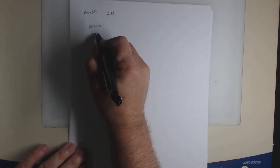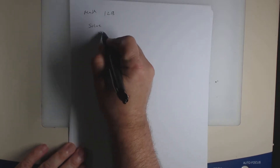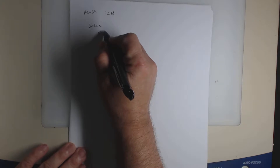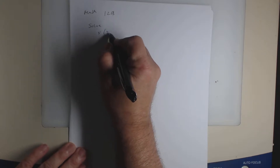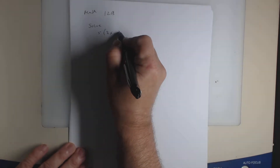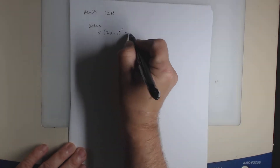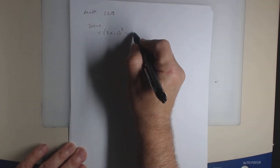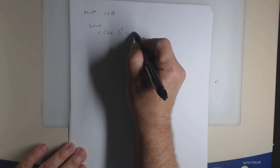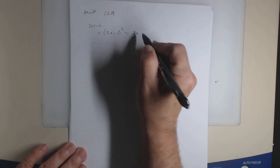Alright, you want to solve 5 times (2x minus 1) squared equals 20.